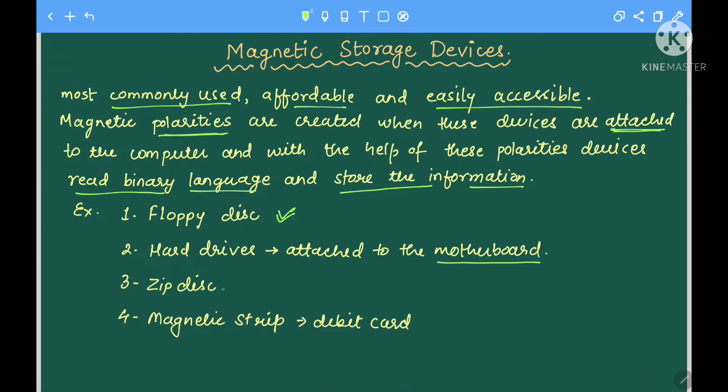For example, the magnetic strip which we generally see in debit cards. When you use a debit card in an ATM, you will see a black strip. This strip is a magnetic strip which stores a binary sequence. The ATM, which is a type of computer, can process this information and provide output.